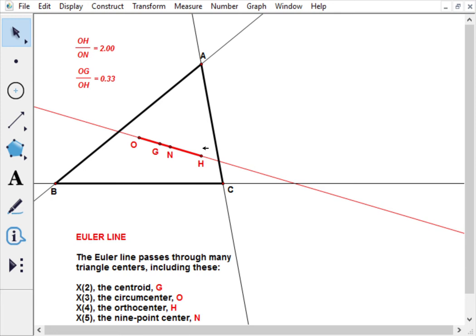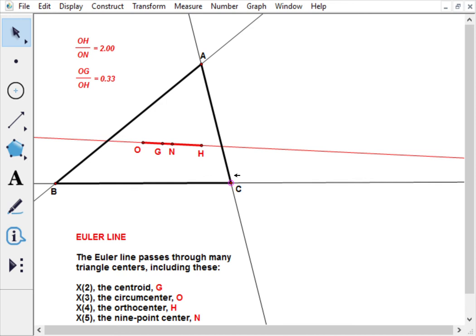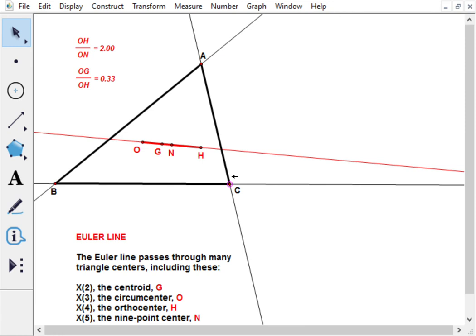One can easily wonder what the rest of humanity was doing for all those millennia. Euler also noticed that there was always a fixed ratio between these three points, and you can perhaps see that if we move them around a little bit.